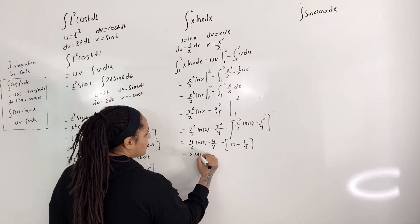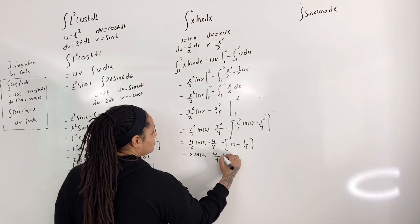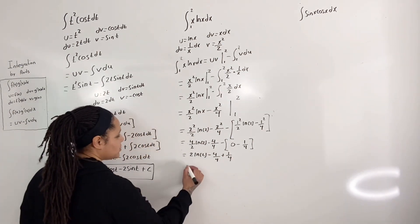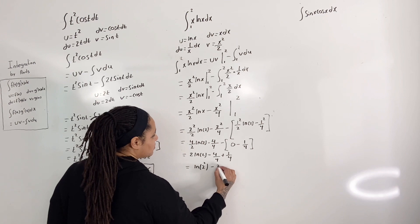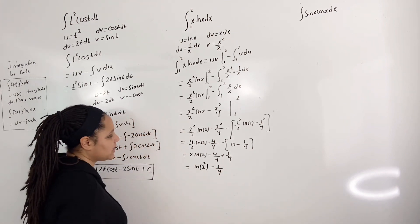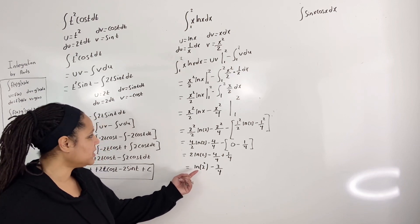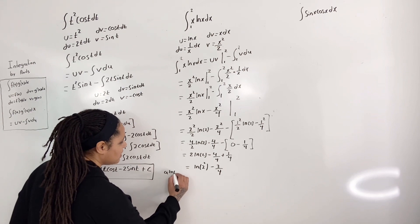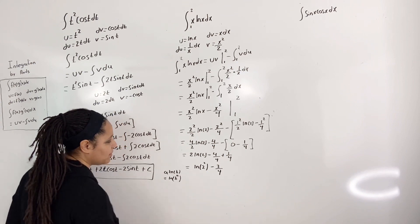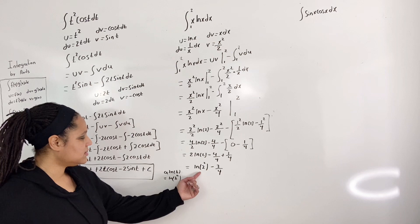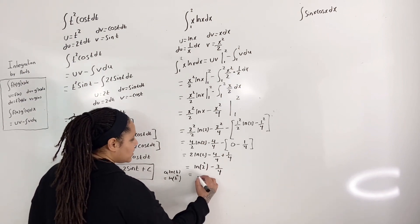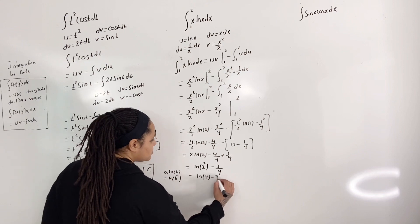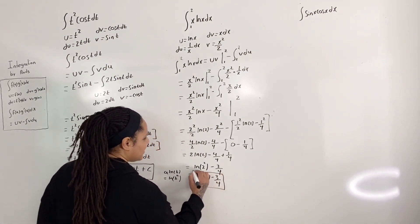Distributing the negative sign and reducing 4/2 gives 2 ln(2) minus 4/4 plus 1/4. Simplifying further, this becomes ln(2²) minus 3/4, applying the log property that a·ln(b) equals ln(b^a). Combining the fractions gives us ln(4) minus 3/4, which is the final answer.